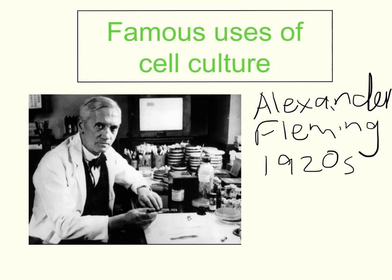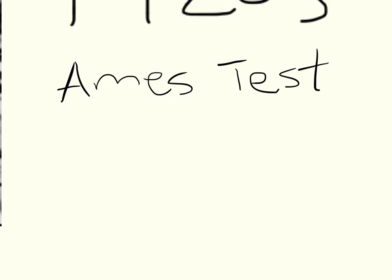Another use of cell culturing has been something called the AIMS Test. The AIMS Test is a procedure that uses bacterial cell cultures to test the effects of certain chemicals, particularly to see whether or not they are mutagenic chemicals. We've already learnt about mutagenic chemicals, and what they're trying to find out is whether these chemicals can actually cause changes to the DNA. The advantage of using a cell culture is that we can test it on bacterial cells, and the implications of that are not too significant.